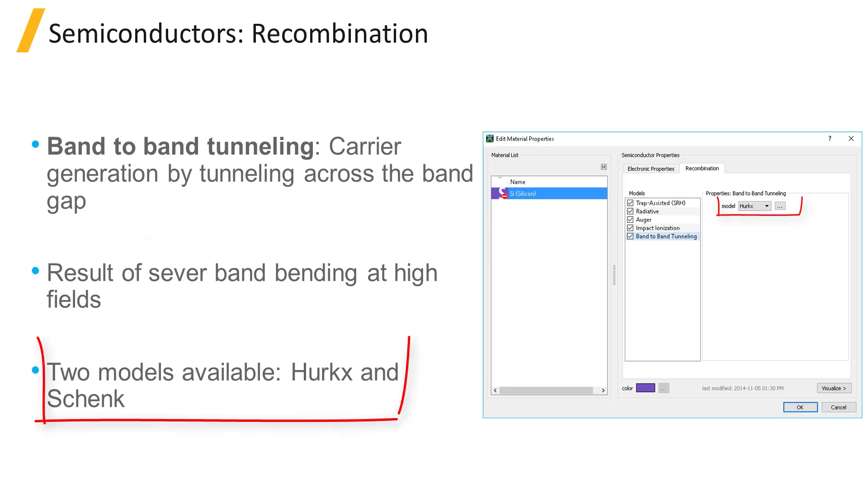Two models for this process are included in Device: the Hurkx and Schenk models. For more information about these models, see the related links below. In the next unit, we will explore other material types including conductors and insulators.